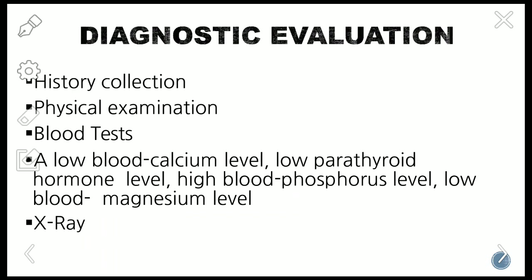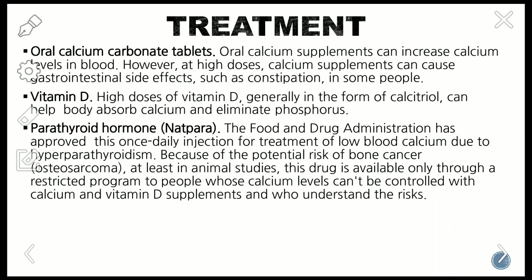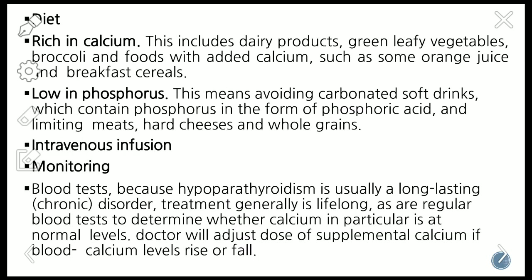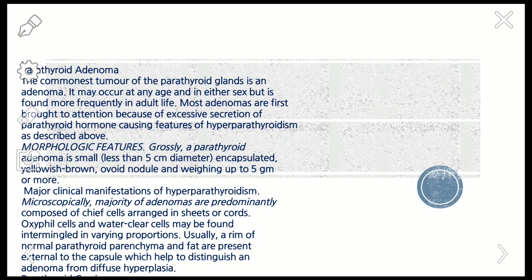In diagnosis, you take history, perform physical examination, and blood tests. Blood tests show low blood calcium level, low parathyroid hormone level, high phosphorus level, and low magnesium level. Treatment includes oral calcium carbonate tablets, vitamin D, and parathyroid hormone tablets. Diet should be rich in calcium and low in phosphorus; intravenous infusion and monitoring of all tests can also be done.